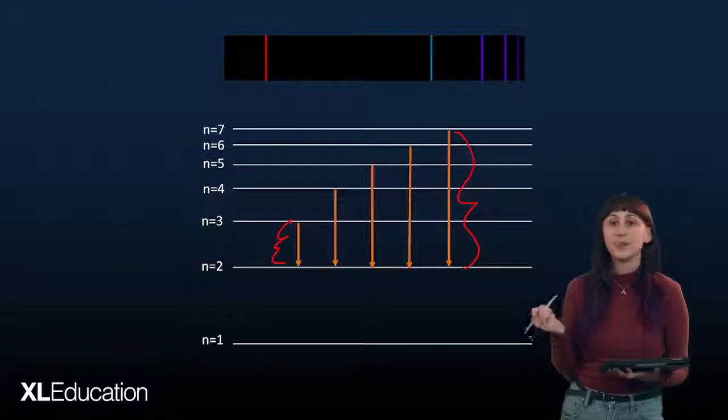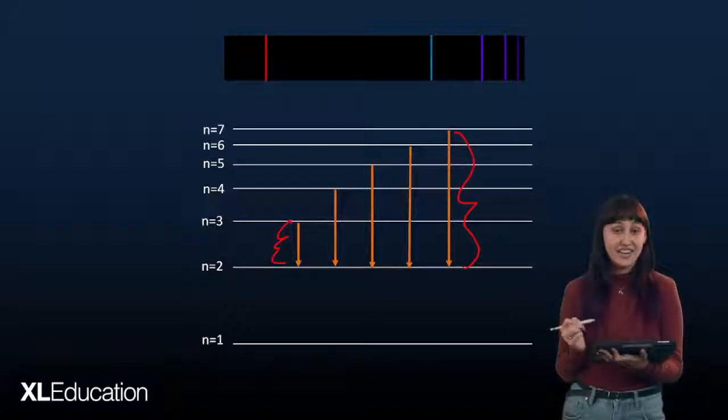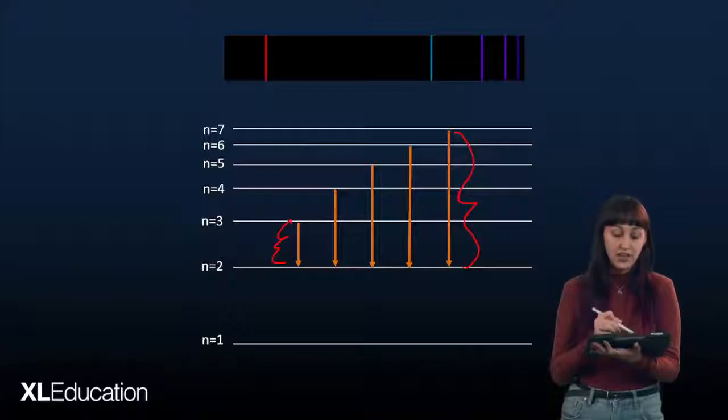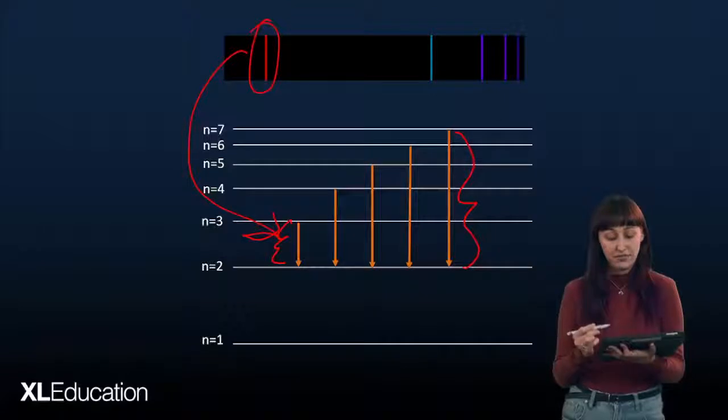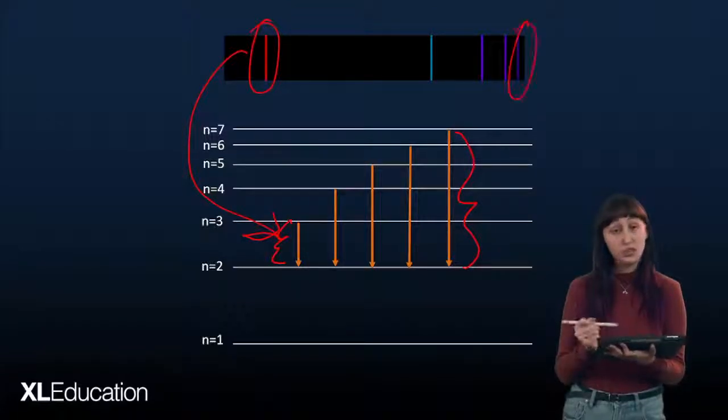If you remember from the electromagnetic spectrum, red light has the lowest frequency. Therefore, the red band will be due to the transition lowest in energy. And the violet band here will be due to the transition that is highest in energy.